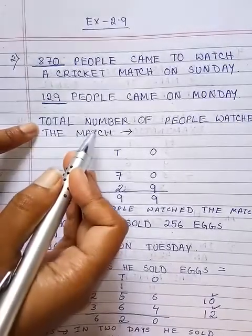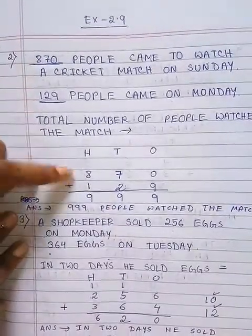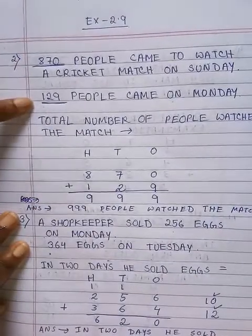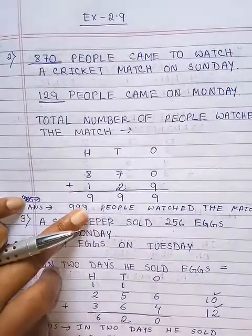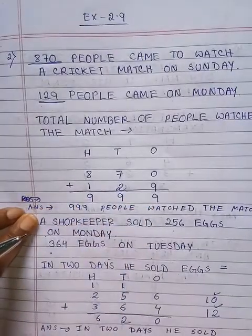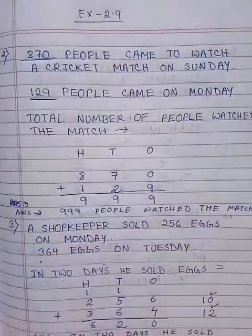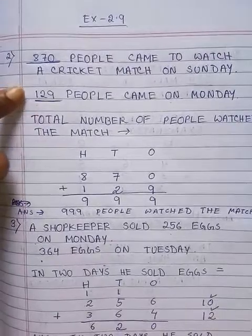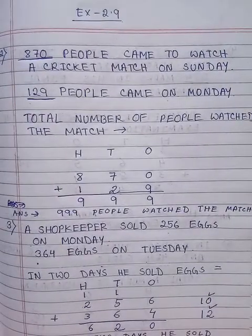Since we are finding the total number, the next step is adding these two numbers — the number of people who came on Sunday and the number who came on Monday. After addition we are getting 999. So next we are writing the answer: 999 people watched the match.